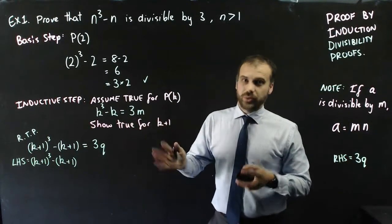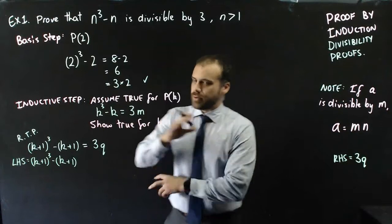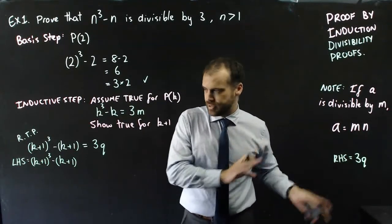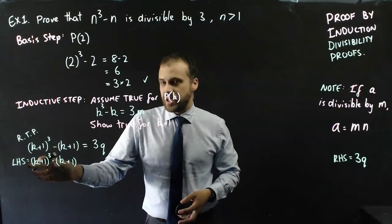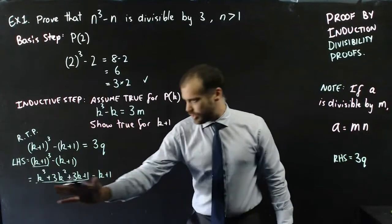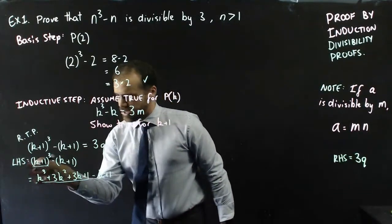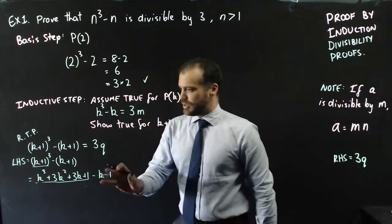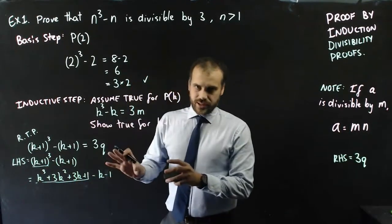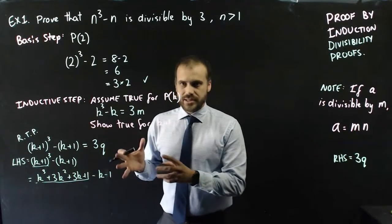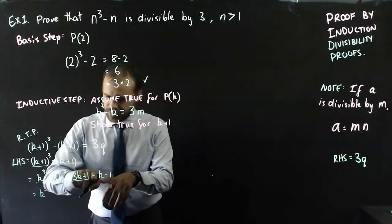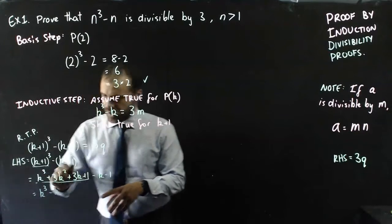We're always working on the left-hand side when it comes to divisibility proofs. Divisibility proofs always get worse before they get better — uglier before they get neater. So that k plus 1 cubed I'm going to expand: k plus 1 times k plus 1 times k plus 1, and then leave that negative k plus 1. The plus 1 and the negative 1 cancel out, so I've got no more constants left.